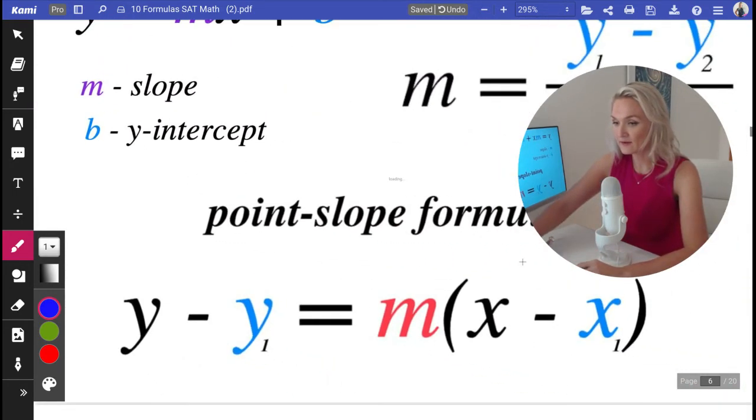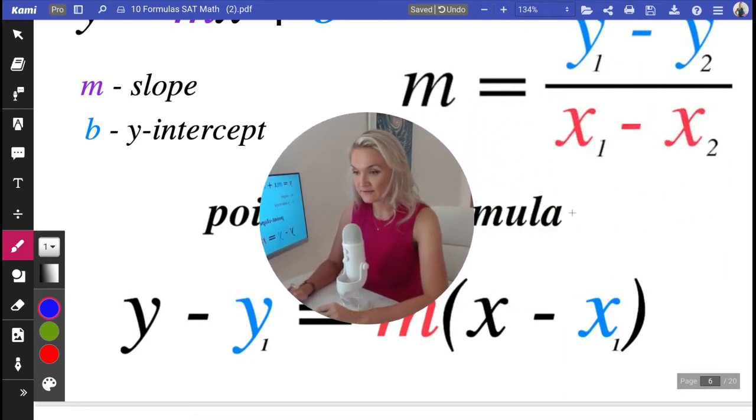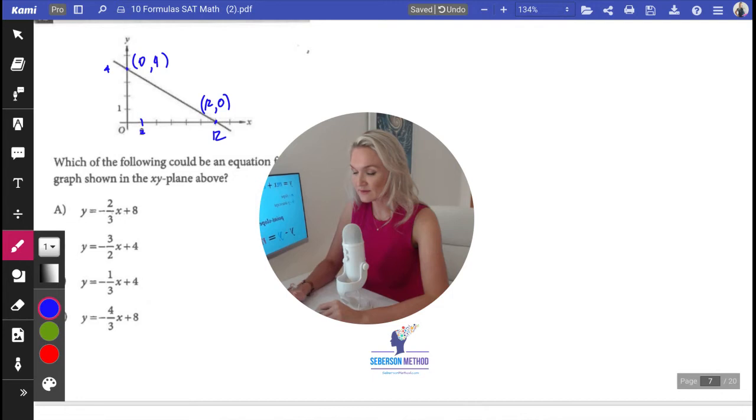So now I have these two points and now I can calculate the slope using the formula we just mentioned above this little guy. The difference of y over the difference of x. Let's do this.